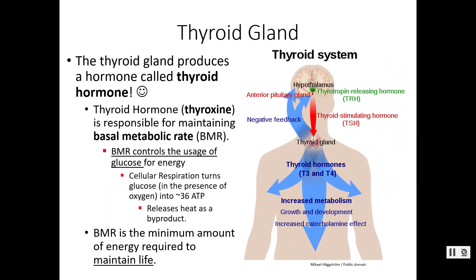This particular lab — BMR and BMI — is concerned with the thyroid gland and thyroid hormone specifically. Thyroid hormone comes from your thyroid gland. You may hear it referred to as thyroxine, T3 and T4, or abbreviated as TH. They're all names for the same hormone — just thyroid hormone.